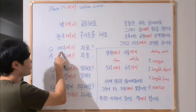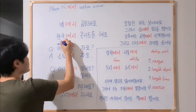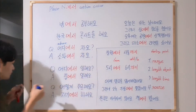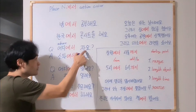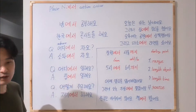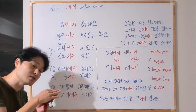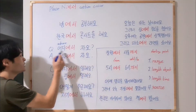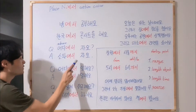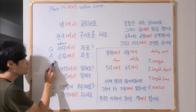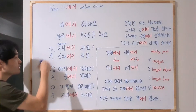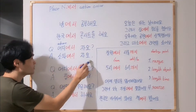어디 means 'where.' 어디에서 자요? The verb 자다 means 'to sleep' — even if you don't do much, you sleep, this is an action. So, 어디에서 자요? means 'Where do you sleep?' Answer: 소파 is the place — 소파에서 자요.